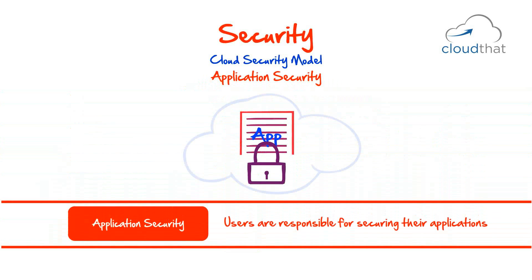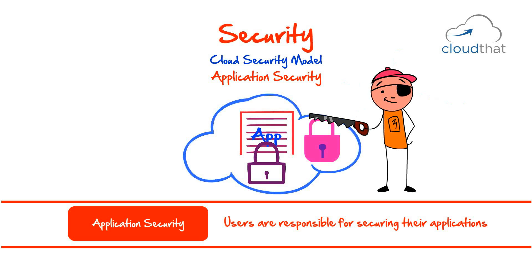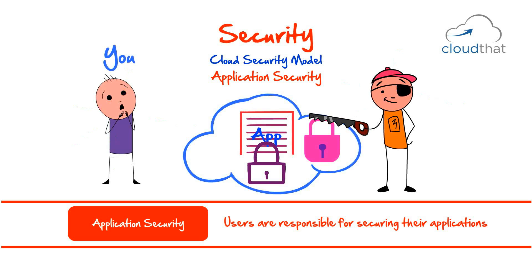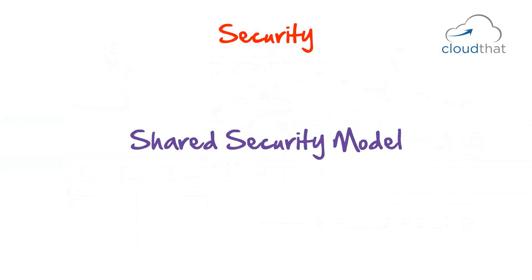Application security: necessary steps should be taken to ensure the application itself is secure. Even if the infrastructure is secure, if a hacker can get access to your application and through it your infrastructure, you are accountable. It is your responsibility as a user to plug all possible security loopholes in the application.